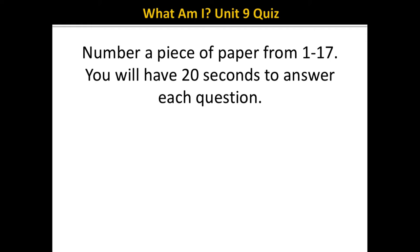This is a practice quiz for Unit 9, designed to give you practice recalling taxonomic names you should know for the exam. Number a piece of paper from 1 to 17. I highly recommend writing down your answers because this will give you practice actually writing out the taxonomic names — sometimes it might seem easy to imagine those words in your head, but you'll realize you can't write them when you try. I will read each question and you will have 20 seconds to answer before I show you the answer.